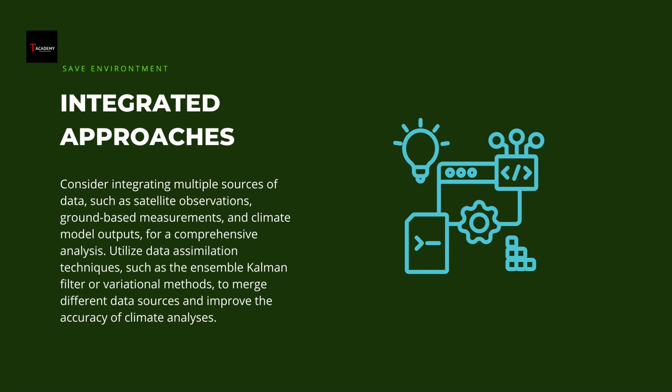Consider integrating multiple sources of data, such as satellite observations, ground-based measurements, and climate model outputs, for a comprehensive analysis. Utilize data assimilation techniques to merge different data sources and improve the accuracy of climate analyses. An integrated approach provides a more holistic understanding of the climate system.